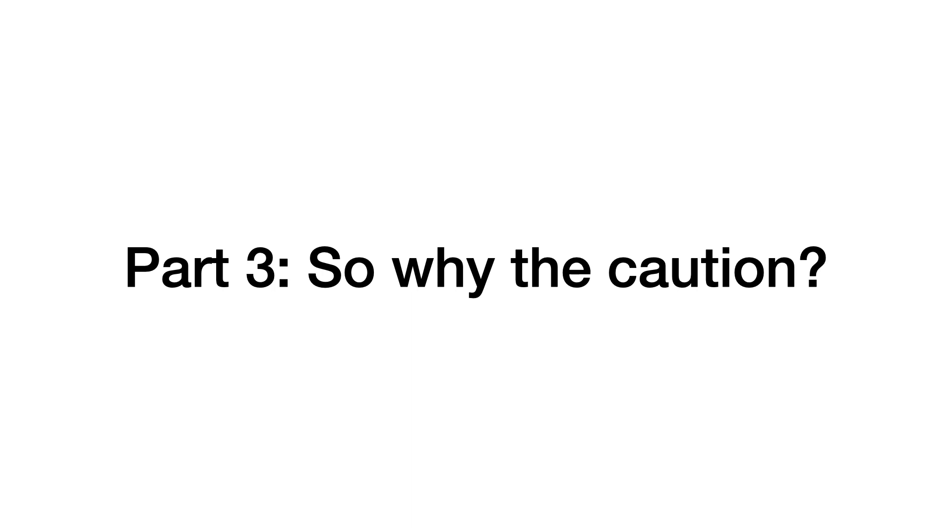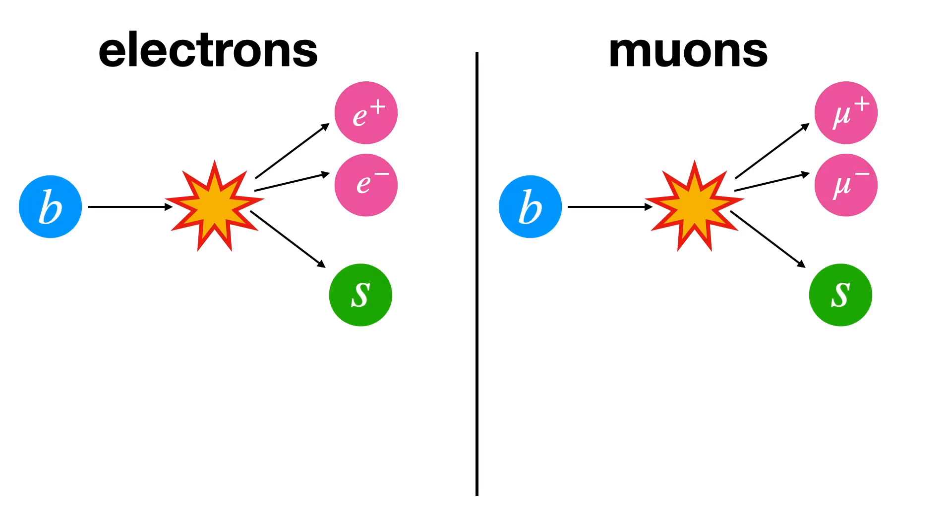Well, as scientists, we don't just make measurements. We also estimate uncertainties on those measurements. And the uncertainty on this measurement suggests there's about a 1 in 1,000 chance it's just a fluke.